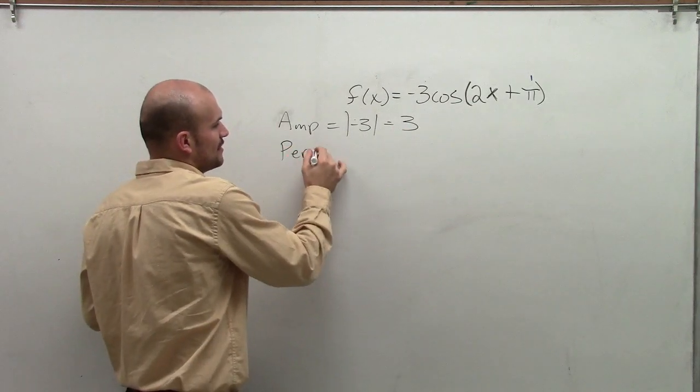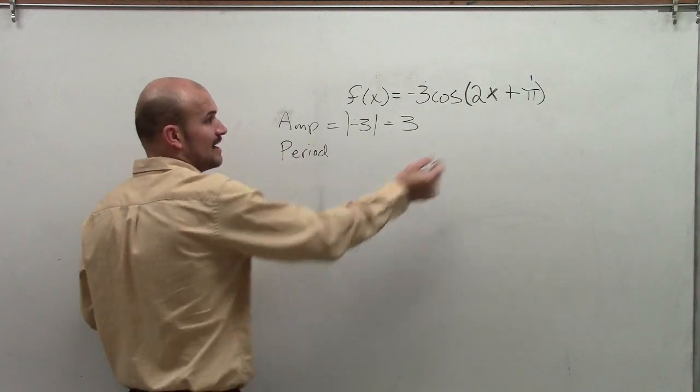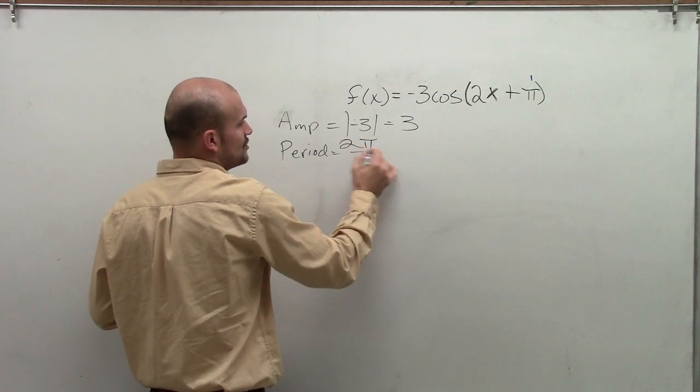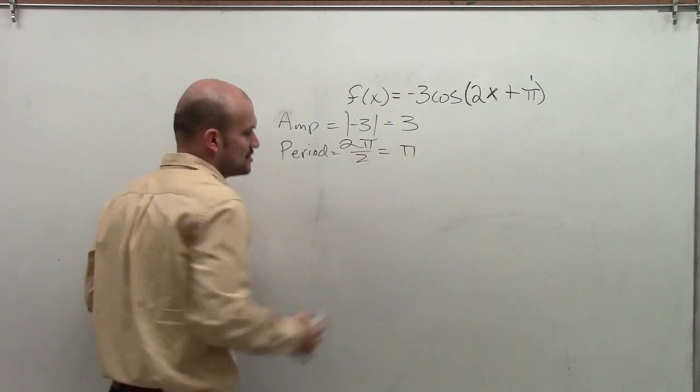The period, remember, is going to be 2π divided by b, which in this case is 2. So therefore, we're going to have 2π divided by 2, which is π.